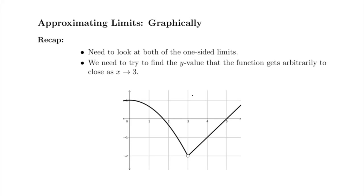As a recap, we need to be looking at one-sided limits here. We saw at the end of our last video that for a two-sided limit to exist, we need the left and the right-sided limits to both match up with the same real number. What we're going to be looking at is trying to find the y value — a single real number — that the function gets arbitrarily close to as x approaches 3, or as x is sufficiently close to 3.